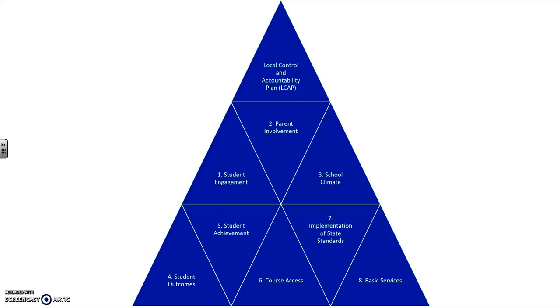How is the district planning to involve parents in different aspects for student success? So the accountability plan asks districts to keep this in mind. Also, school climate.